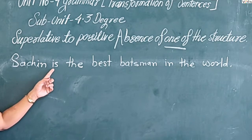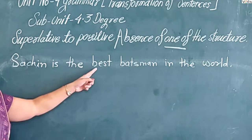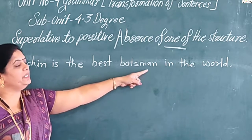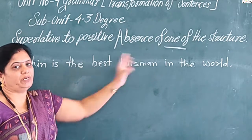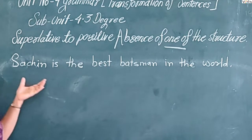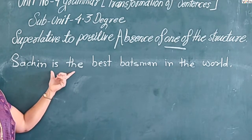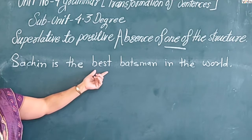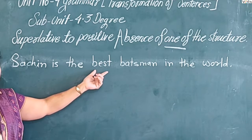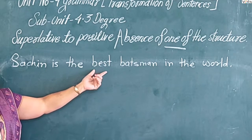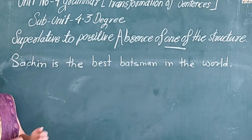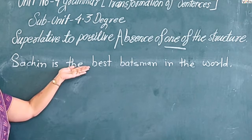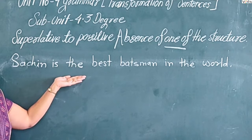This is the sentence: 'Sanjee is the best man in the world.' In this sentence, there is no 'one of'. So, how do we change this sentence to the positive degree?